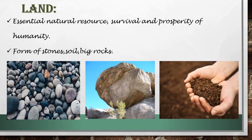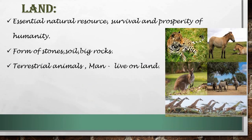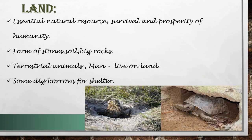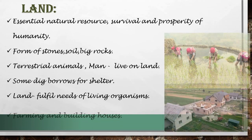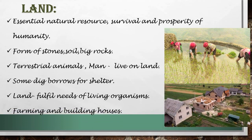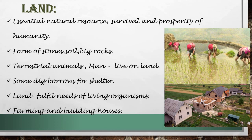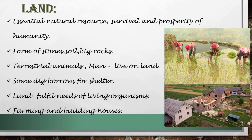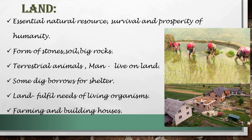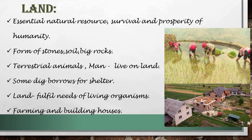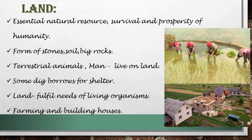All terrestrial animals, including humans, live on land. Some terrestrial animals dig burrows for shelter, using land to fulfill their needs. We use land for farming, building houses, and roads. Plants and animals that grow on land are useful to us, and minerals, crude oil, and natural gas obtained from the land are very important. Land is an important resource for all living organisms on earth.